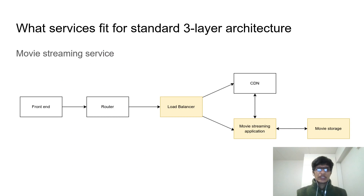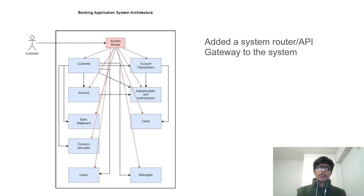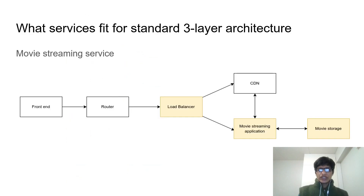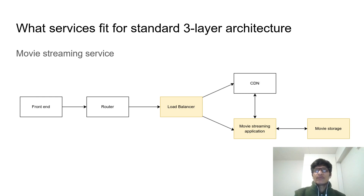Those are the only two changes made to the system architecture according to the new knowledge we have gained. Regarding services, we have discussed that most of the services follow the standard three-tier architecture pattern.